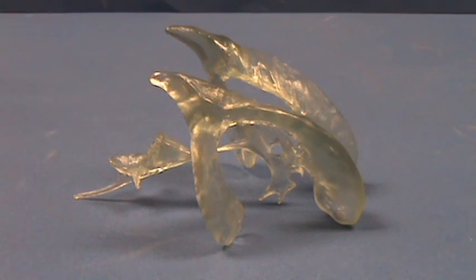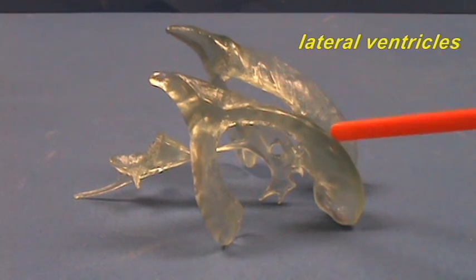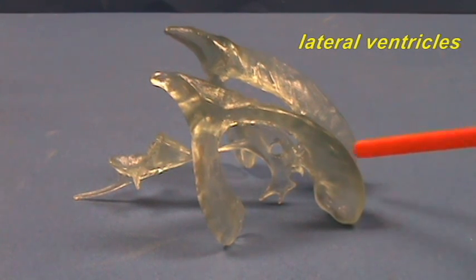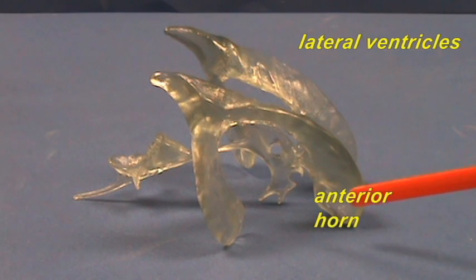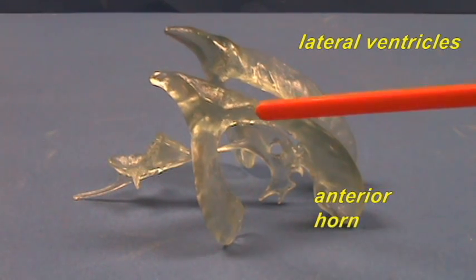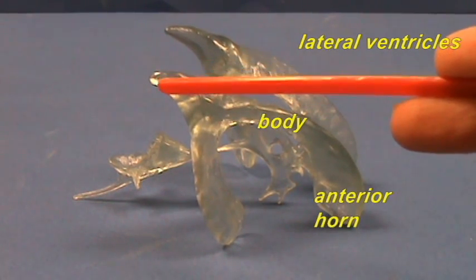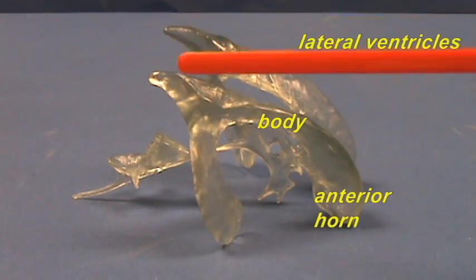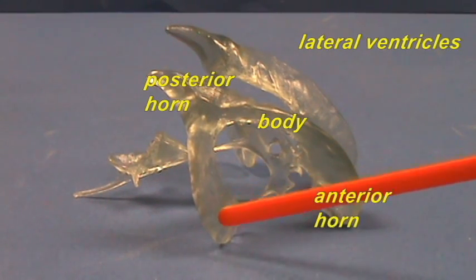The largest ventricles are the lateral ventricles, and you have two of them, one on each side. Right over here, we have the anterior horn of the lateral ventricles, which would be extending into the frontal lobe. Right over here, we have the body of the lateral ventricles. Extending into the occipital lobes, we have the posterior horns, and then extending into the temporal lobe, we have the inferior horns.